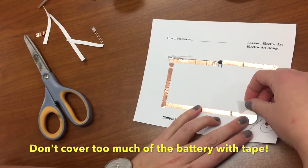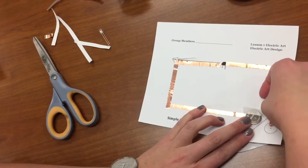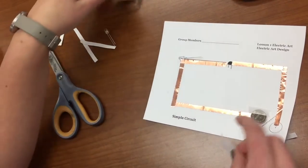Make sure you don't cover up the whole battery because if you cover up the whole battery with this clear tape you're going to not be able to have a clear connection for the electrons to flow through.